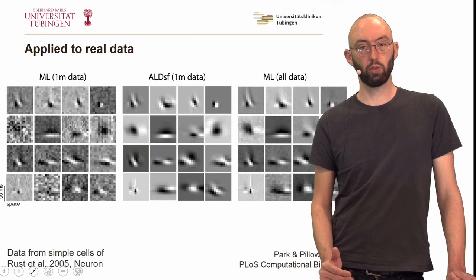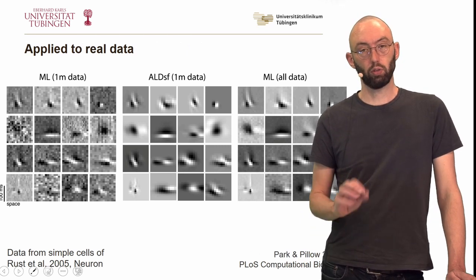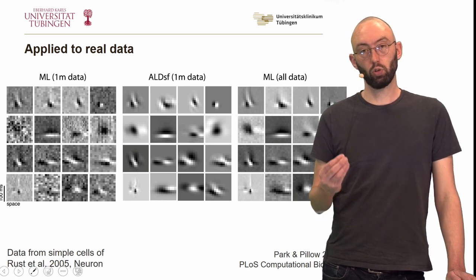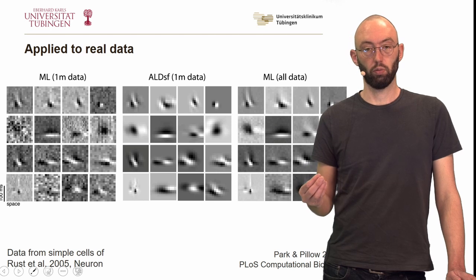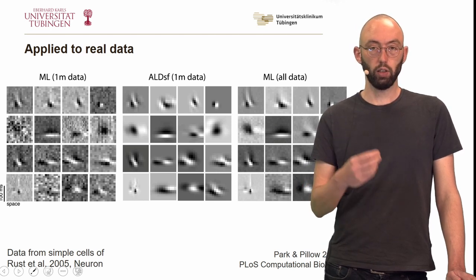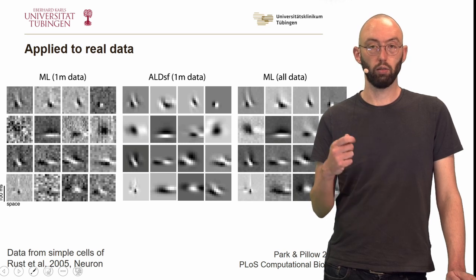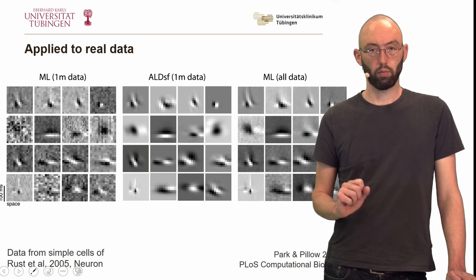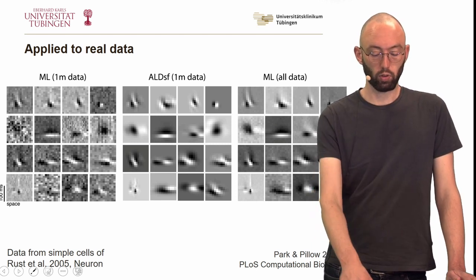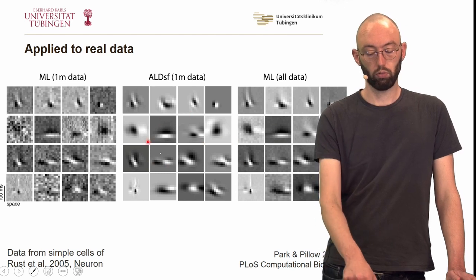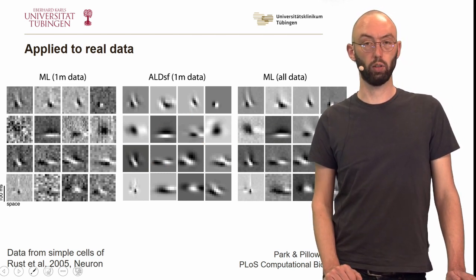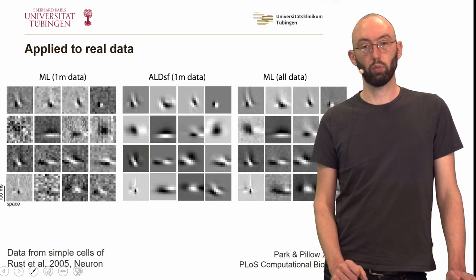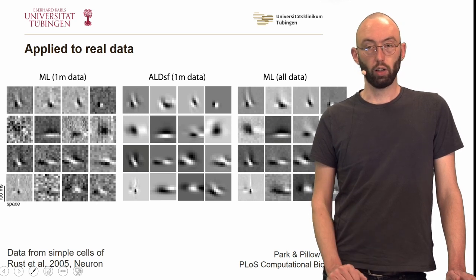What has been brushed under the carpet so far is that to compute the empirical Bayes solution for the hyperparameters we need a linear Gaussian model — a model with a linear receptive field and Gaussian noise, not a Linear-Nonlinear-Poisson model. Of course it would be nice to also compute such good data-efficient receptive fields in the LNP model. Additionally, doing this evidence optimization step is often very time-consuming.